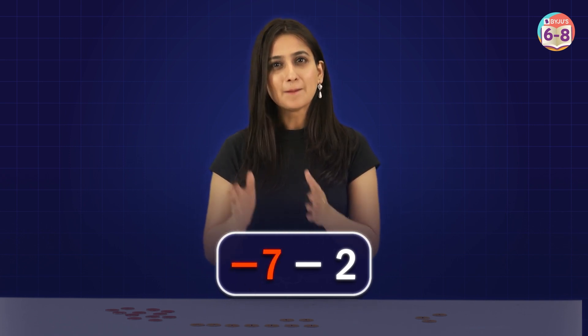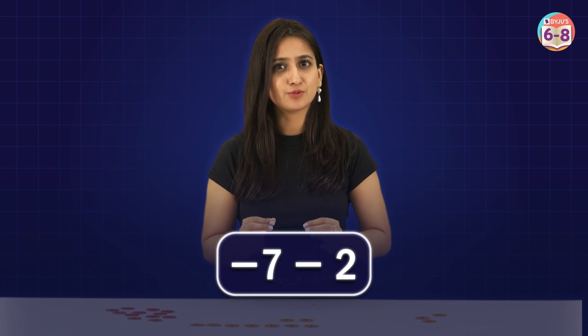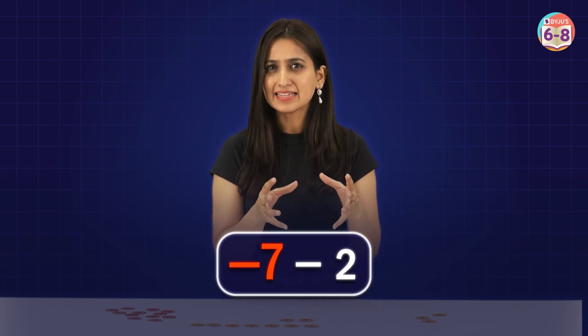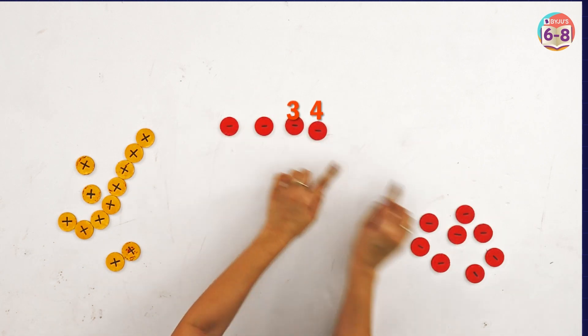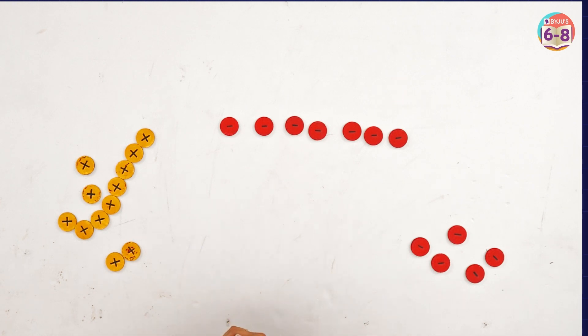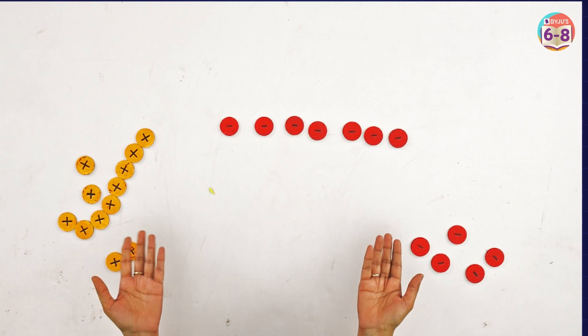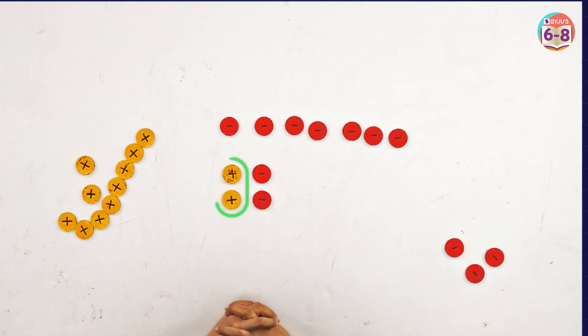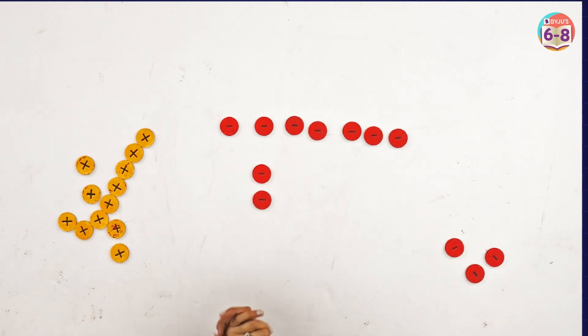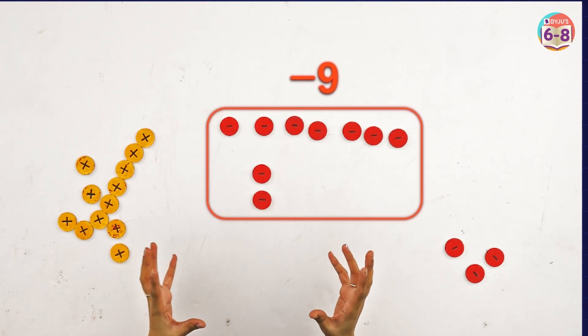Now let's try minus seven minus two. That means we subtract positive two from negative seven, so we first take seven negative chips. Then we need to remove two positive chips, but we don't have any positive chips. So we add two sets of positive-negative chip pairs. Now we have two positive chips to remove. After removing them, we are left with nine negative chips, so the answer is minus nine. On the number line, minus seven means seven steps to the left, and minus two means two more steps to the left, landing on minus nine.